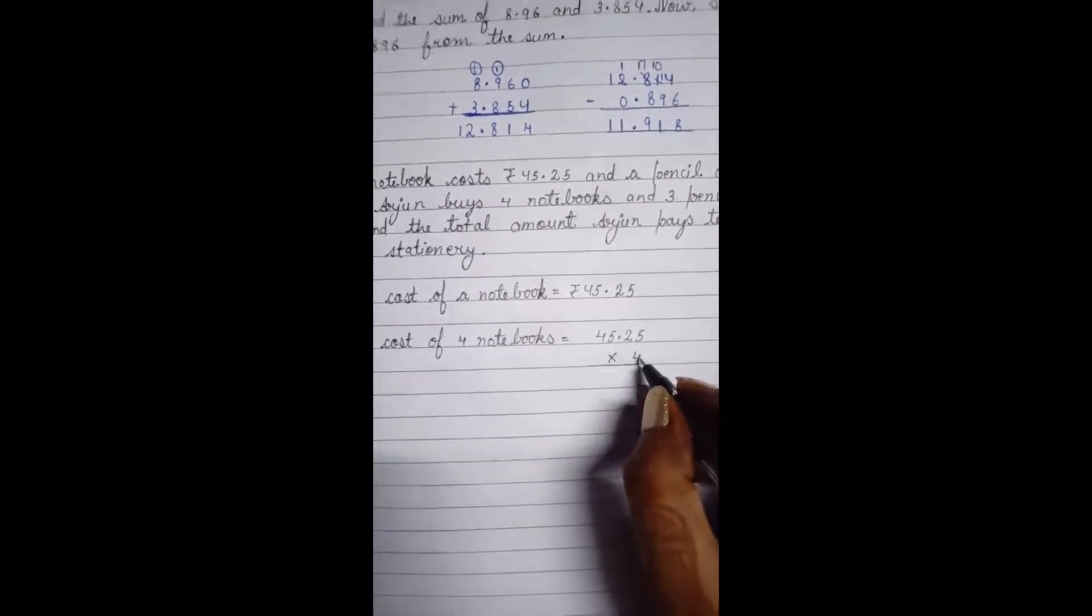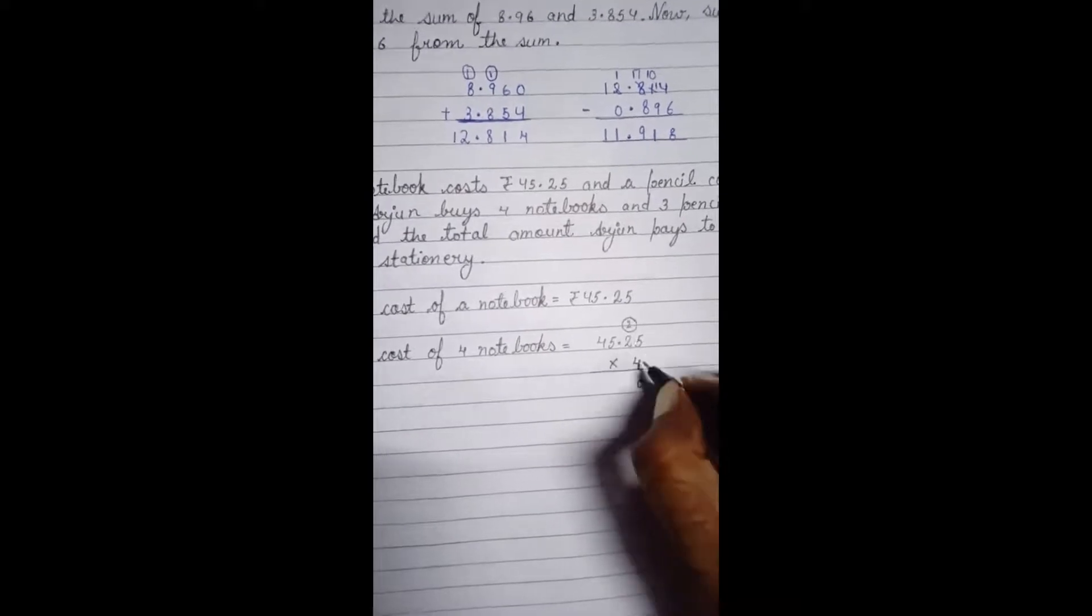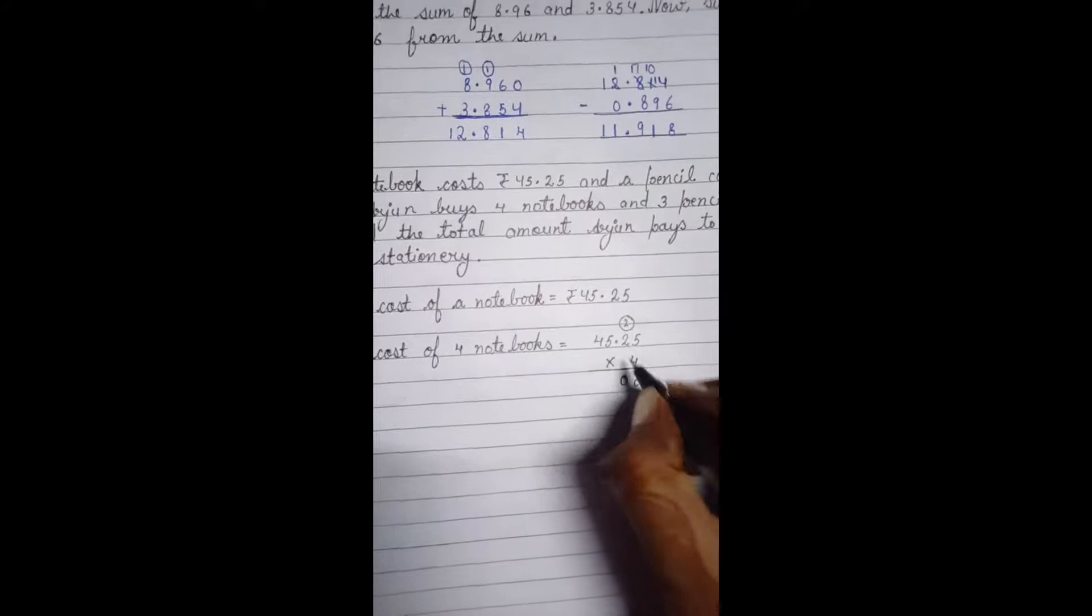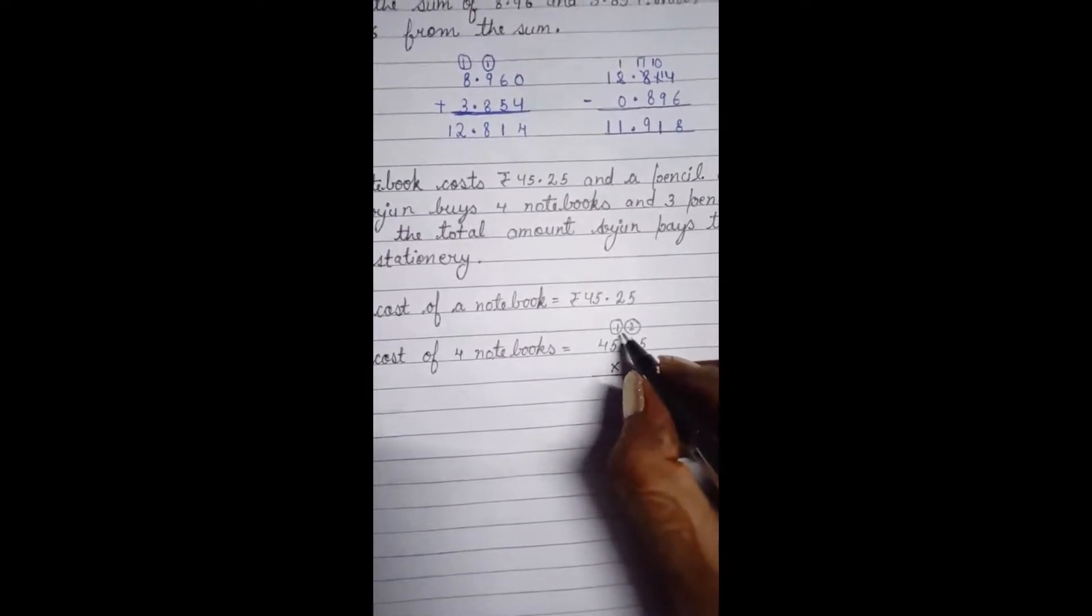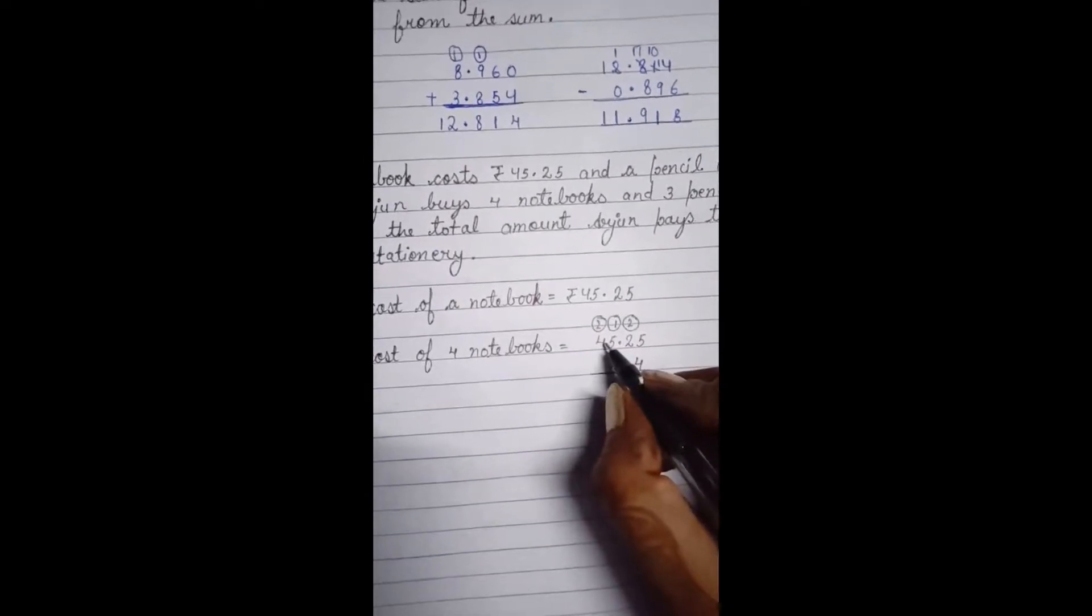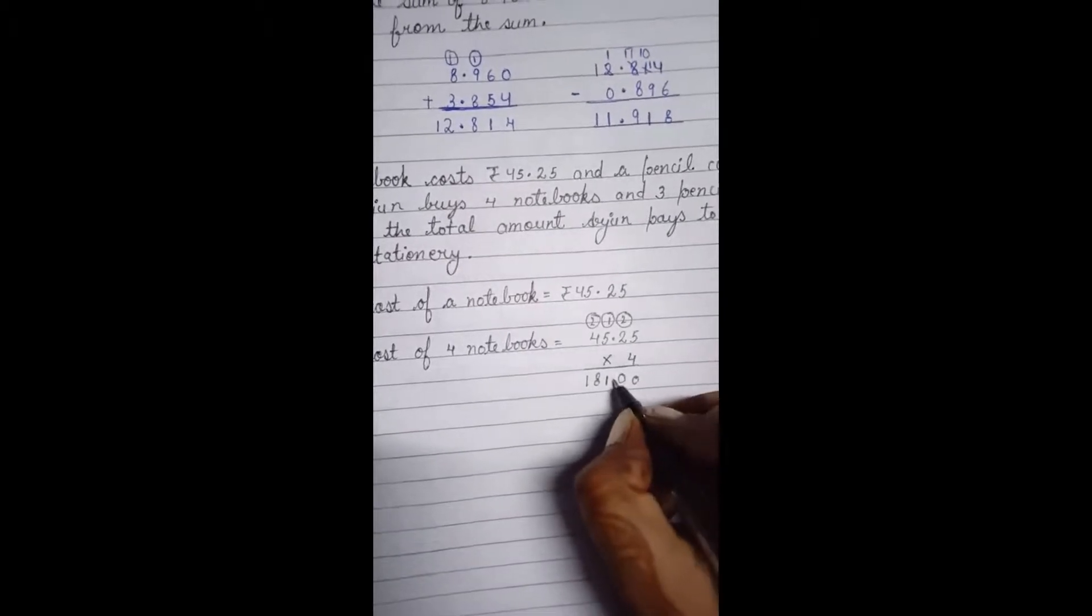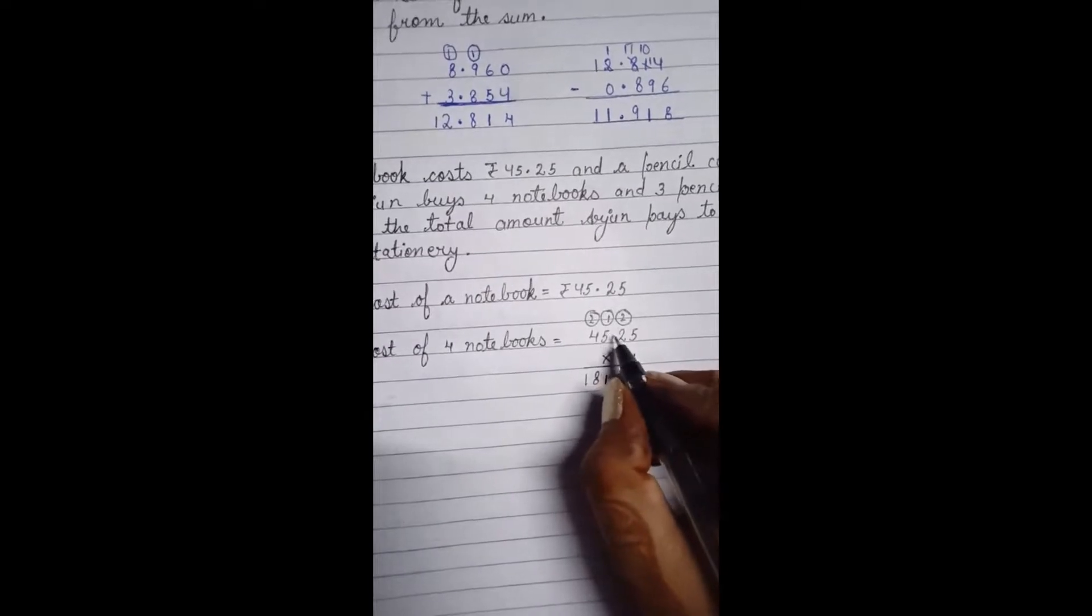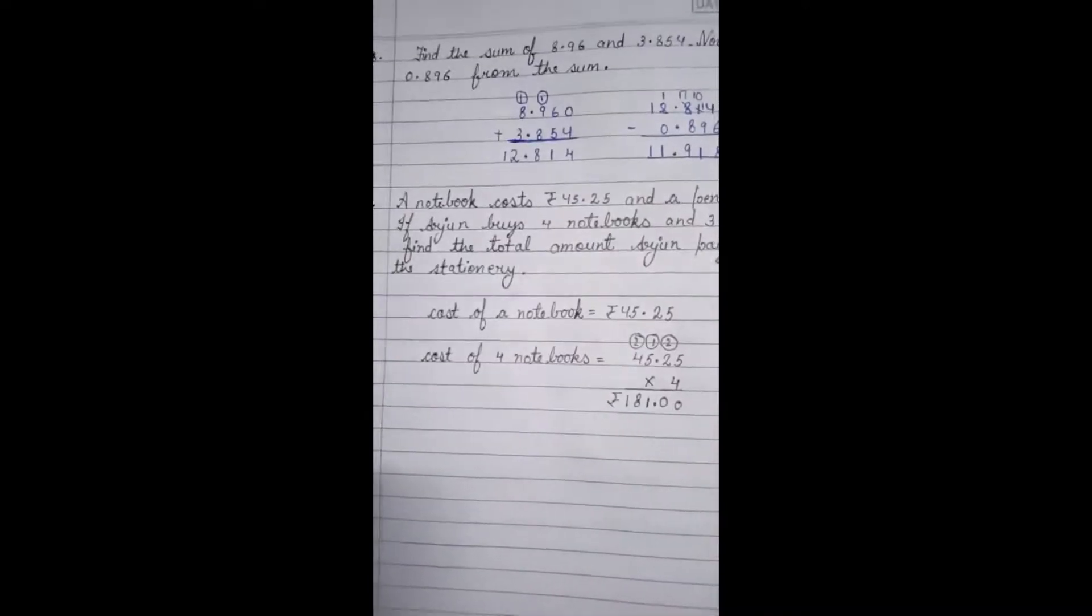Let us start multiplying. 4 times 5 is 20, 2 carry forward. 4 times 2 is 8, 8 plus 2 is 10, 1 carry forward. 4 times 5 is 20, 20 plus 1 is 21, 2 carry. 4 times 4 is 16, 16 plus 2 is 18. Now here we will insert decimal point after 2 digits because there is a decimal point here also. So cost of 4 notebooks, we have got 181 rupees.